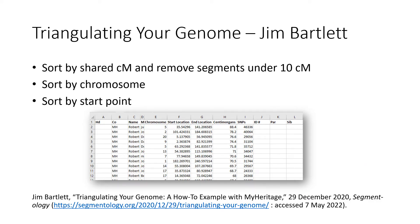I had been experimenting with a methodology from Jim Bartlett, where he talks about how to triangulate your whole genome, and that's where I got the idea to do this. He talks about how to download the spreadsheet and sort it: first sort by shared centimorgans, then remove any segments under 10 centimorgans, because a lot of those could be false and it's easier to work with your segments if you remove the smaller ones.